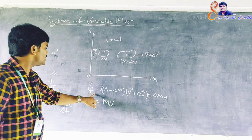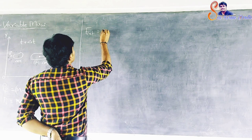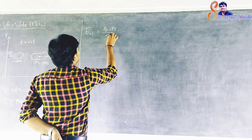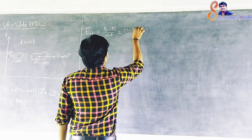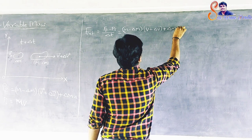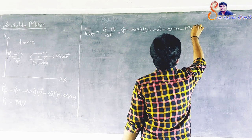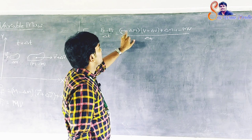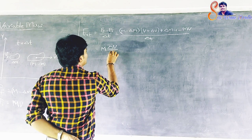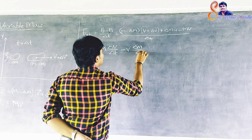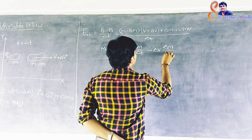Now the final momentum value and the initial momentum value we can substitute here, and we get F external equals pf minus pi by delta t. This equals M delta V by delta t minus V delta M by delta t minus delta V delta M by delta t plus U delta M by delta t.